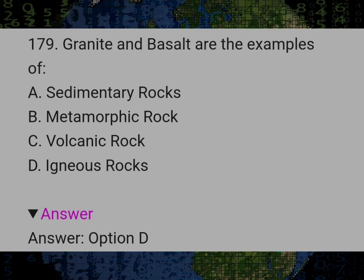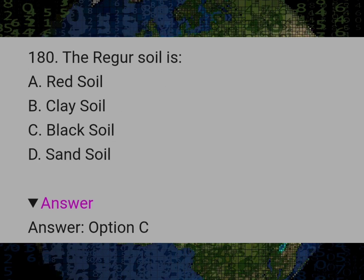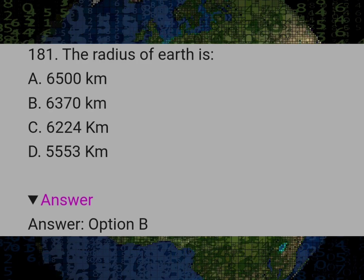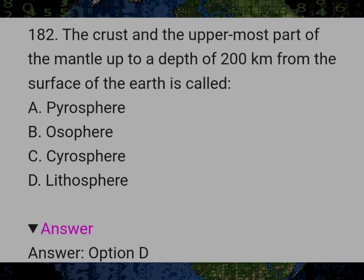Granite and basalt are the examples of? Answer D: Igneous rocks. The regur soil is? Answer C: Black soil. The radius of earth is? Answer B: 6370 km. The crust and the uppermost part of the mantle up to a depth of 200 km from the surface of the earth is called? Answer D: Lithosphere.